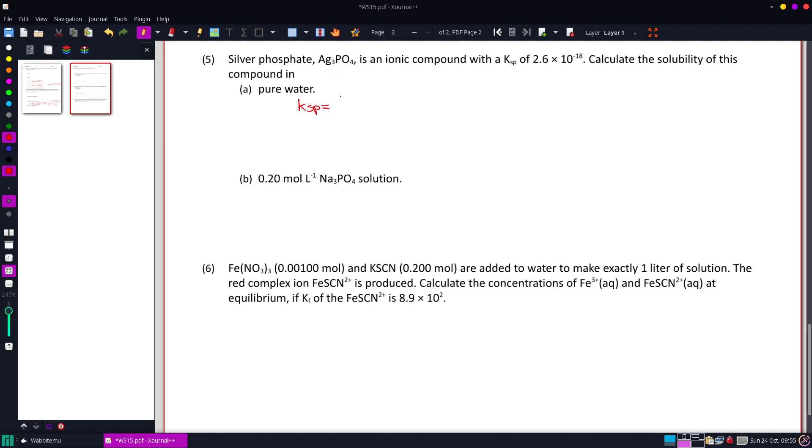So Ksp for the silver phosphate is going to have our three silvers and one phosphate. Alright, we're looking at molar solubility. So for every silver phosphate that dissolves, there would be three silvers and one phosphate.